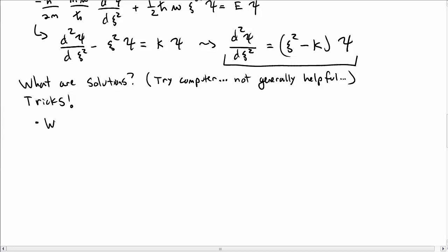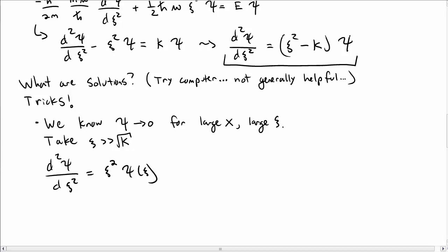So here's one trick. We know that the wave function must go to zero as x is large. Well, x is pretty much the same thing as ξ, so as ξ is large. So let's take the limit of ξ much much greater than K, or really we should be talking about square root of K. So ξ much much greater than the square root of K, then d²ψ/dξ² is approximately ξ²ψ. Well, you can find solutions to that.